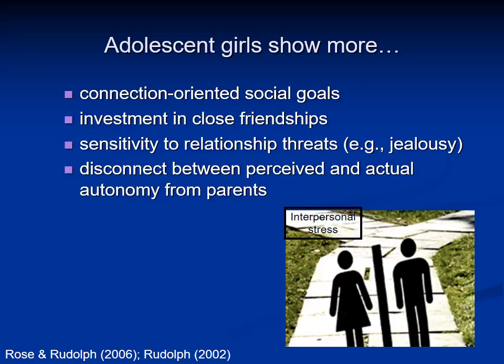We thought that girls may be more likely than boys to experience more stress related to these changes for several reasons. Girls show more connection-oriented social goals, so they may be more troubled when their friendship groups shift or if they have a breakup with a romantic partner. Girls also have more investment in their close friendships — they're more sensitive to relationship threats and show more jealousy in relationships. Also, girls' desire to gain autonomy from their parents increases, but parents tend to show more controlling behavior with girls than boys, which may create more conflict. So interpersonal disruption during the adolescent transition might create more stress for girls than for boys.